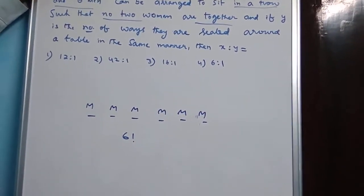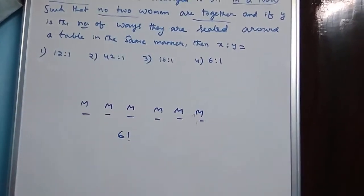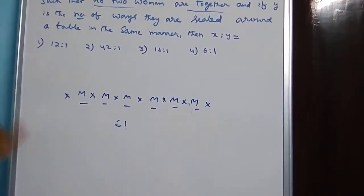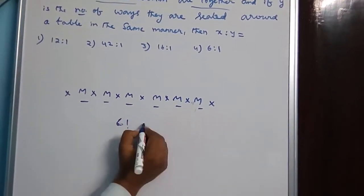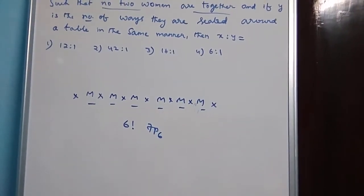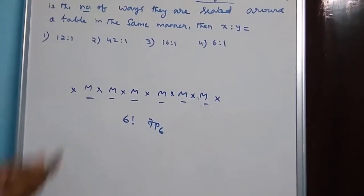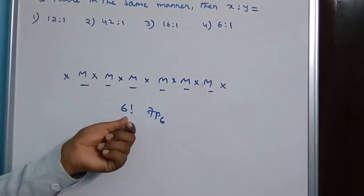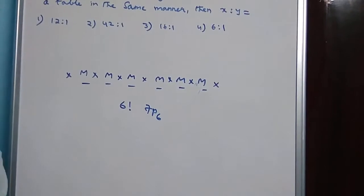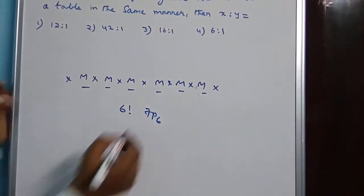First arrange 6 men in 6 places in 6 factorial ways. Now there are some gaps to arrange the remaining 6 women so that no 2 women are together. There are 7 gaps — 1, 2, 3, 4, 5, 6, 7. In these 7 places, 6 women can be arranged in 7P6 ways. So this is 6 factorial into 7P6.